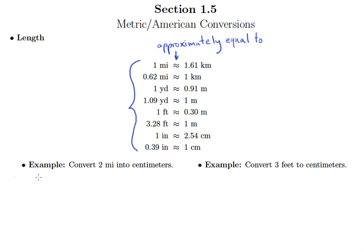Let's start with this first example: convert two miles into centimeters. Before we do too much with this, let's do a little bit of strategizing. Let's think about ways that we could get from miles to centimeters based on that list of approximate equivalencies.